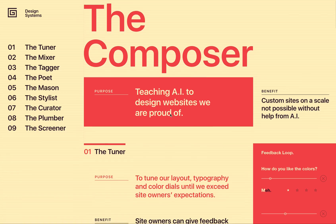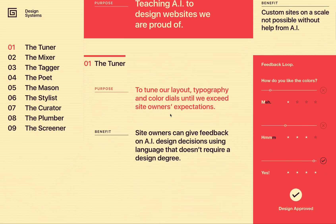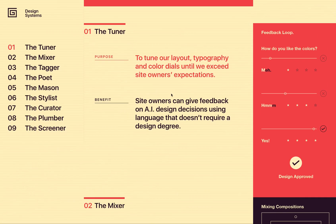The first step in the composer is named the tuner. The tuner's responsibility is to take the answers you provided — for example, in the design review in the web application you will be asked questions like how do you like the colors of your website — and you can answer from one to four stars. Based on the answer you provide, the tuner will try to calculate a new spectrum value that will best fit your needs and taste in terms of design.